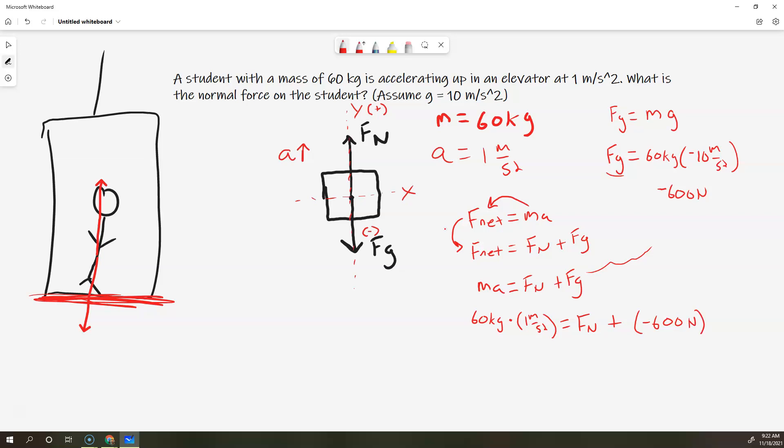So, we do the math, and now we have 60 newtons equals Fn plus negative 600 newtons, or we can just say minus 600 newtons. And now, Fn is equal to 660 newtons. There it is. That's the whole problem.